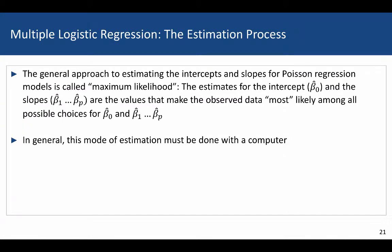Just like with logistic regression, the general approach to estimating the intercept and slopes for Poisson regression is called maximum likelihood. The estimates for the intercept and slopes are the values that make our observed data most likely among all possible choices. This is a complex computational algorithm that must be done by a computer, but it is one that would be replicated on any software we use — whether R, Stata, SAS, SPSS, Minitab, etc. With the same data, we will get the same results.